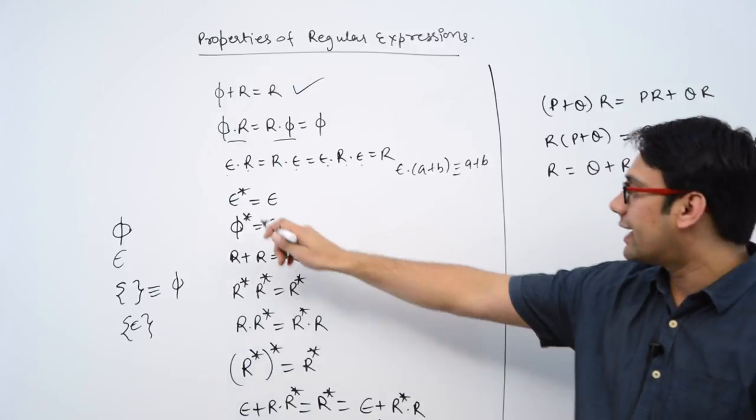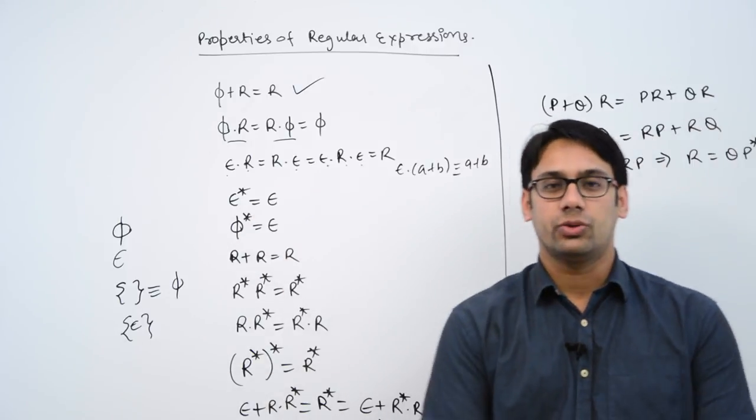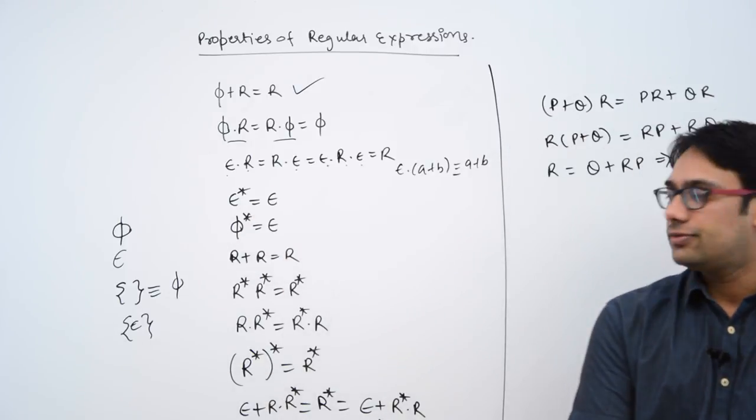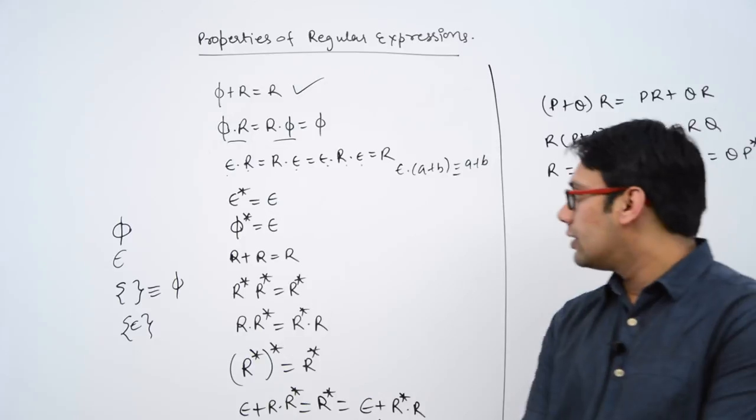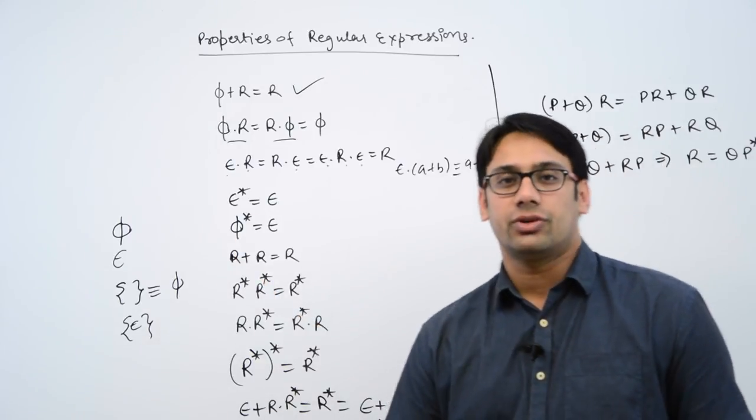When you take a Kleene closure of epsilon, then you get epsilon itself. When you take a Kleene closure of phi, then you get epsilon.